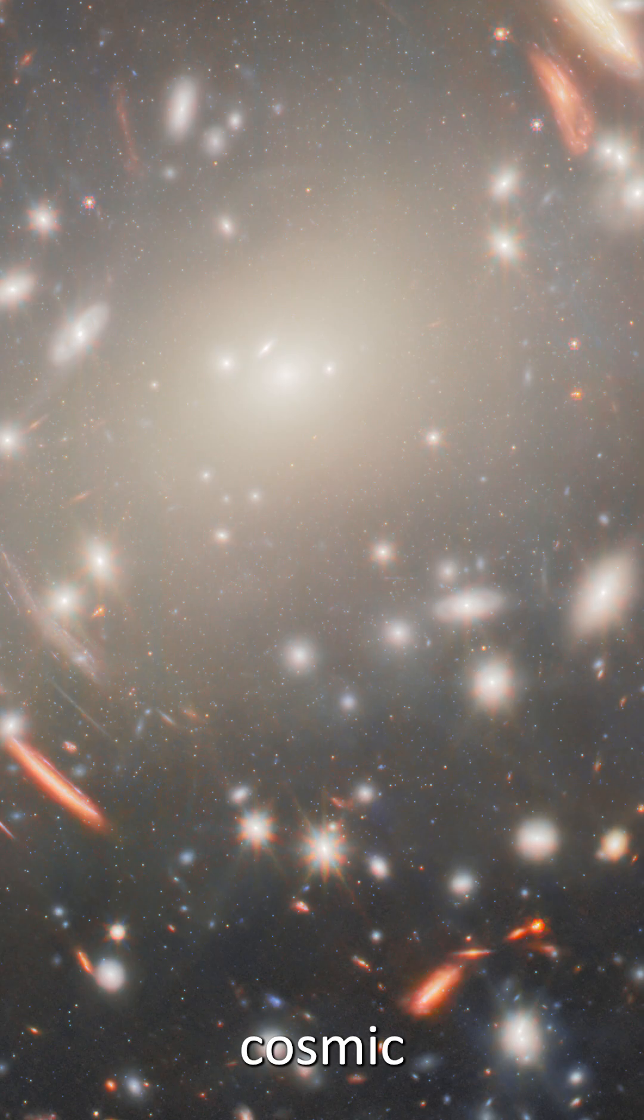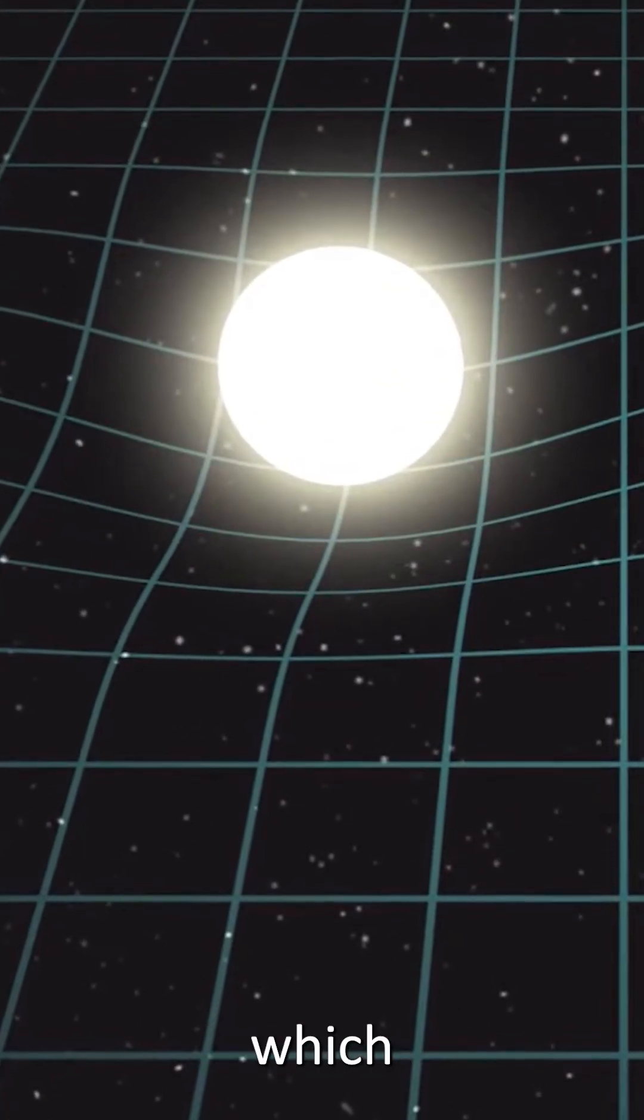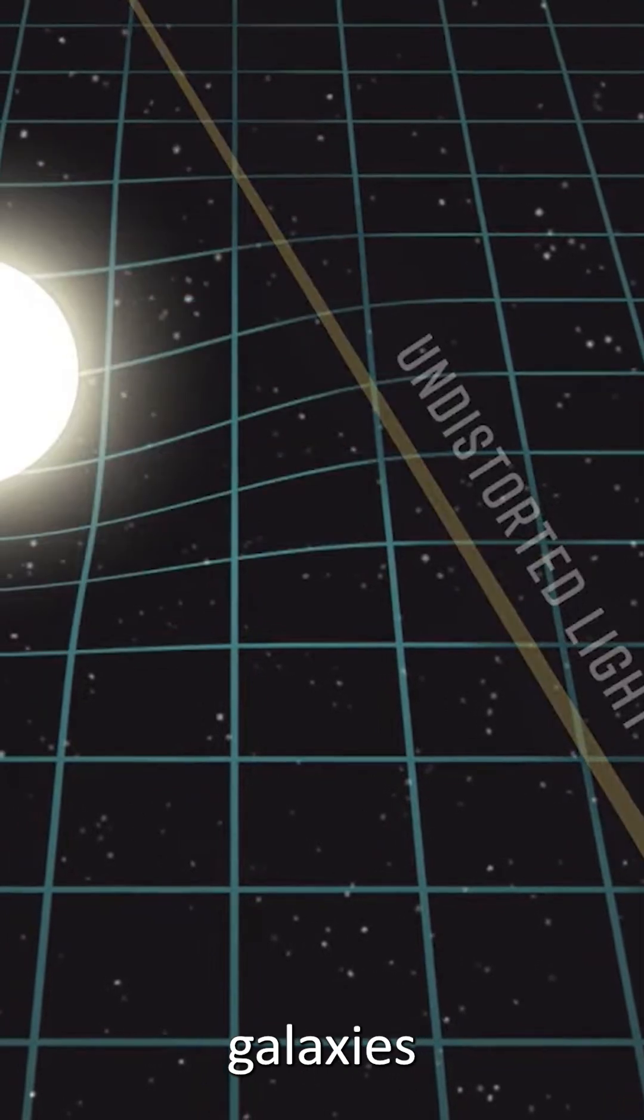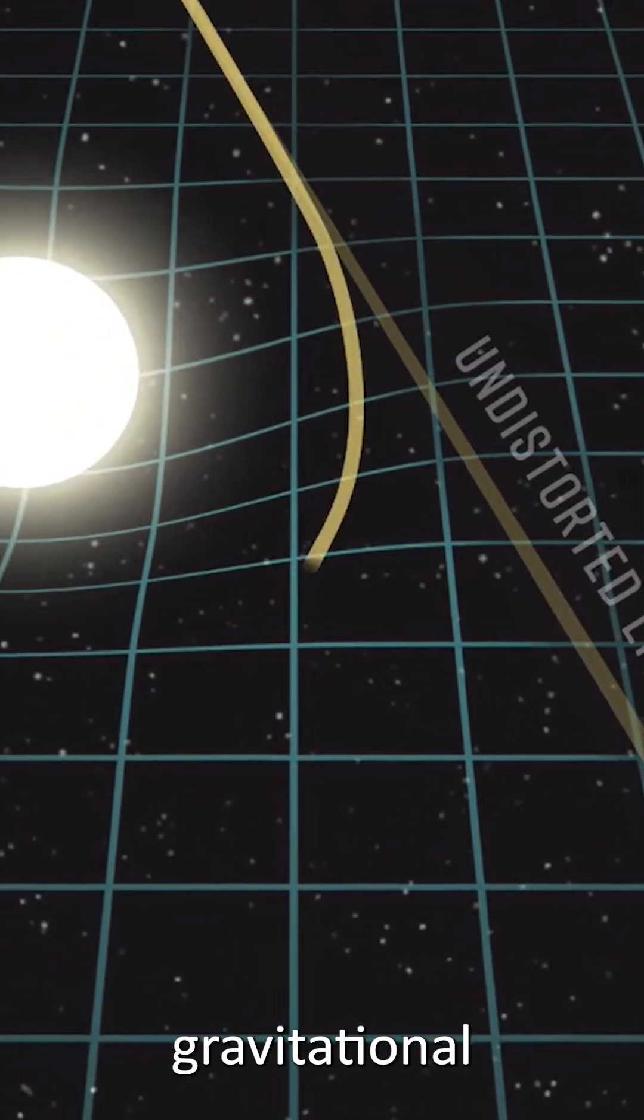We're studying cosmic dawn, using warped spacetime from the cluster, which distorts and magnifies the light from the more distant galaxies in something we call strong gravitational lensing.